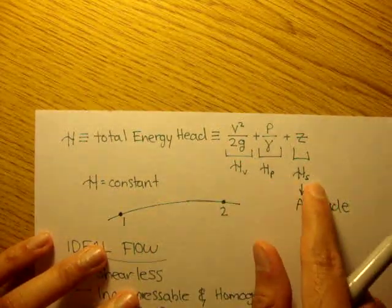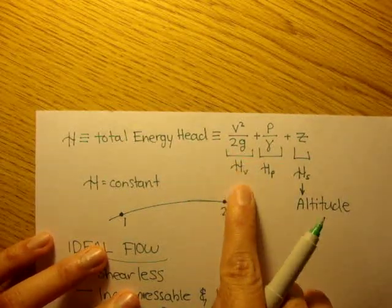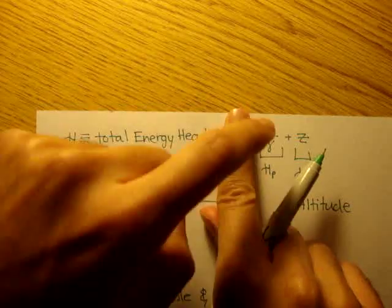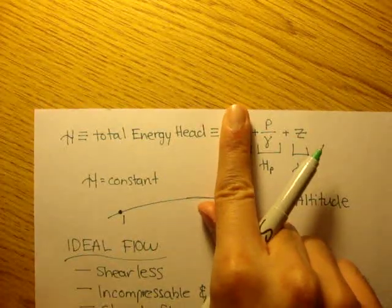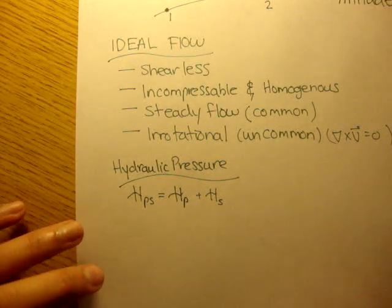So it would be this without the velocity head. So it would be just pressure over gamma plus Z, plus a certain height.